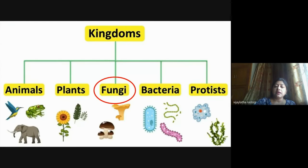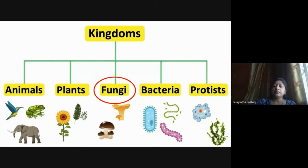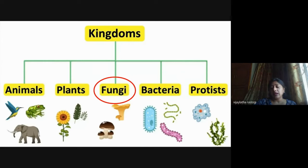To begin, fungi occupy an intermediate position between animals, plants, protists, and prokaryotes. They differ from plants by lacking chlorophyll, and although they share features with animals—such as true nuclei and cellular organelles—they differ in that they don't have cholesterol as part of the cell membrane, among many other differences.